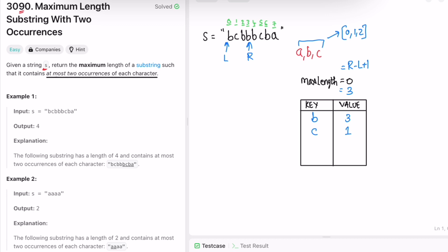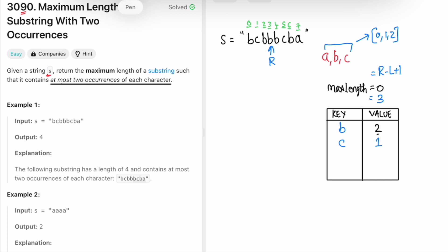Moving the right pointer again, b's value becomes three. But the problem asks for at most two occurrences of each character, so this condition is failing. We have to re-evaluate by moving the left pointer. We access the value at left, which is b, and decrement its count by one — b now has value two. We update that value in the map. If the value becomes zero we remove it from the map, but here it's two. We increment the left pointer and check again if the value at right is within range zero, one, or two.